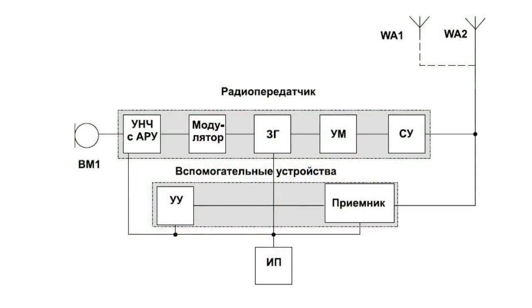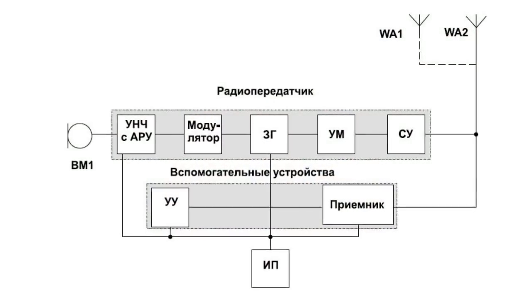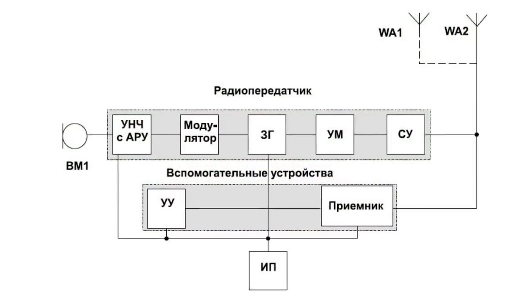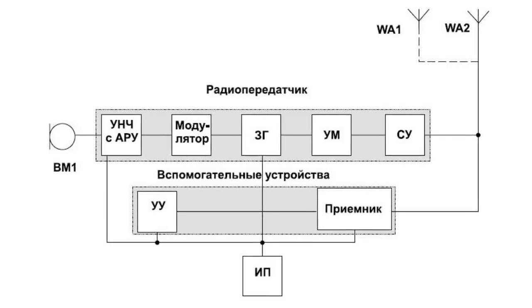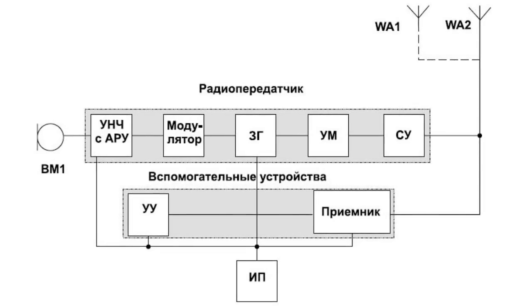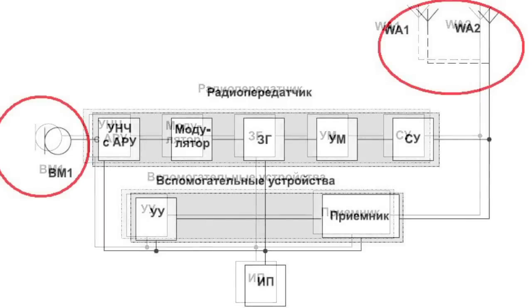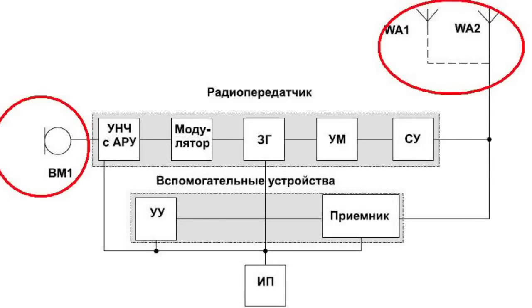The wireless microphone's block diagram is as follows. A radio transmitter includes a microphone amplifier with an automatic signal level control, a modulator, a mass cell oscillator, a power amplifier, a matching device, and a power supply. A transmitting antenna is connected to the output while the microphone is connected to the input.